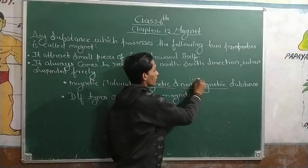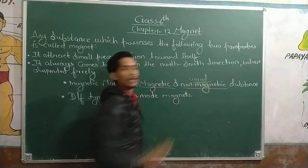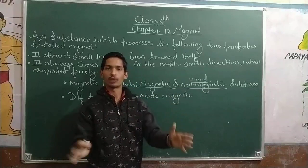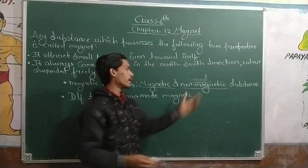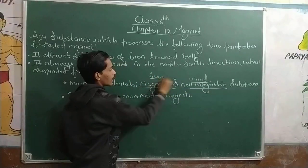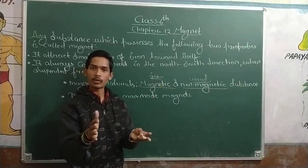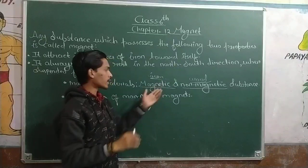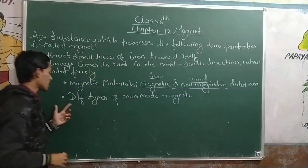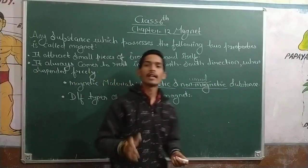For example, wood is a non-magnetic substance. Iron, on the other hand, is attracted to a magnet, so iron is called a magnetic substance.